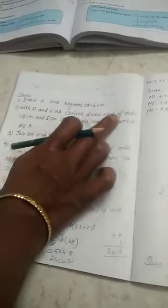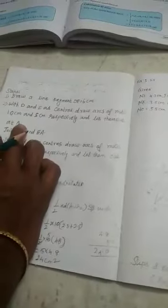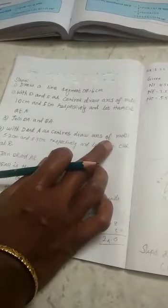Next you write the steps: Draw a line segment DE equal to 6 cm. With D and E as centers, draw arcs of 10 cm and 5 cm respectively and let them cut at A. So first you write A, join DA and EA. With D and A as centers, draw arcs of 5.2 cm and 5.5 cm respectively and let them cut at R. Next you join, next you can draw the perpendicular line from R and E, given the name H1, H2. That is required quadrilateral.